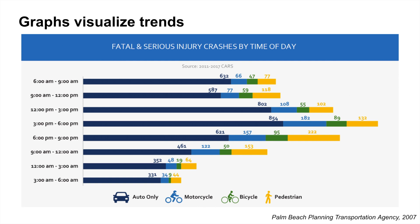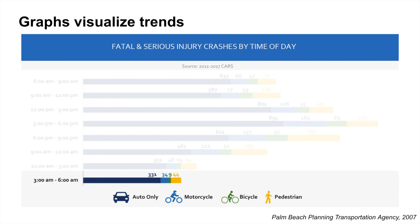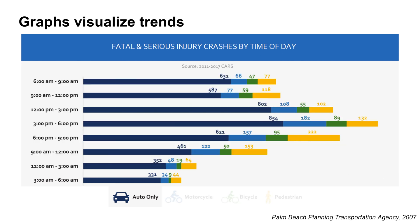Graphs distill information so it can be understood in a single glance. For example, the bar chart on this slide visually displays data about fatal and serious injury crashes. The data are visualized by the period during the day that they occur, and the different colors on each bar represent different modes of transportation. The chart makes it easy to see during which portion of the day the highest number of incidents occur, during which portion the fewest occur, and that automobiles are the mode most commonly involved in serious and fatal crashes.